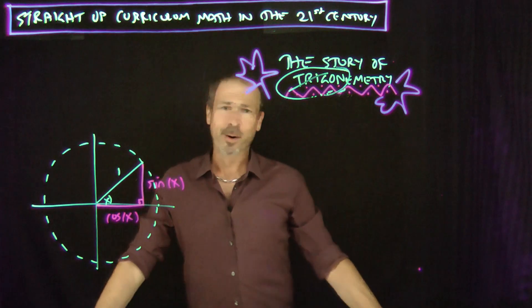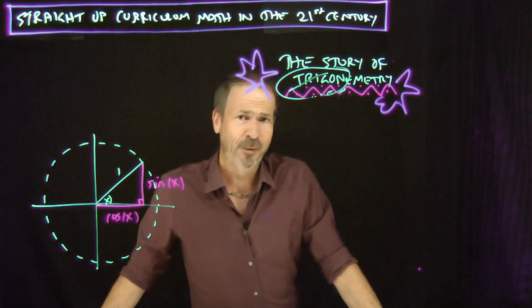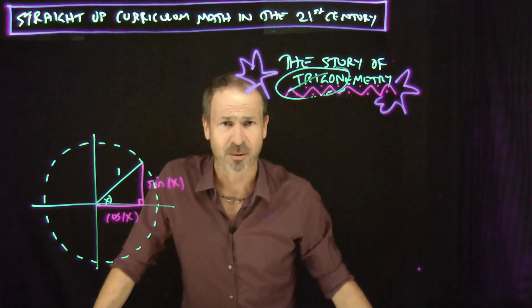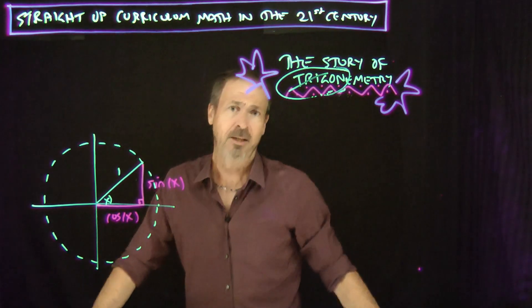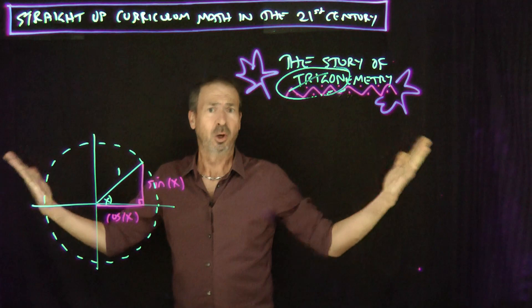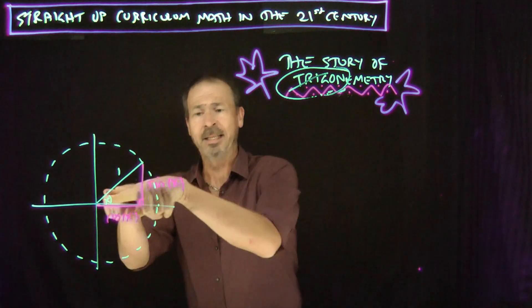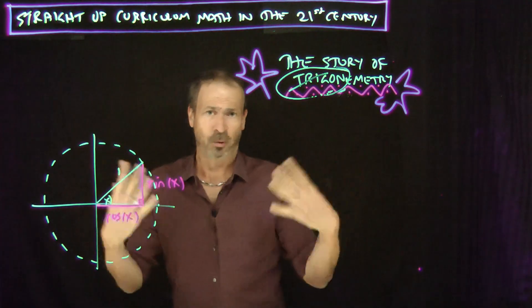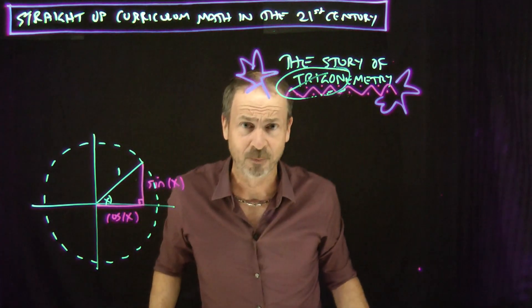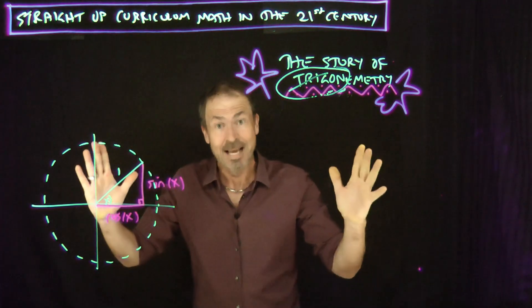But what if I want to work with a circle of a different radius — radius 2, or 7, or 94.6? Could I still work out height and openness for circles of a different radius? And the answer is yes.